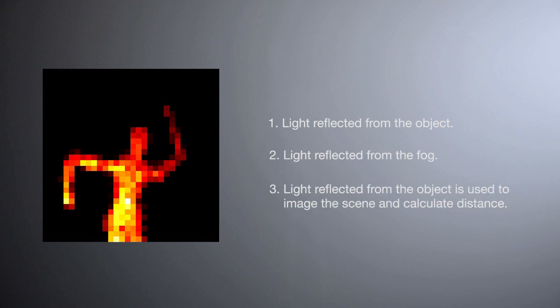The MIT researchers developed an algorithm that uses statistics about the way fog typically scatters light to separate the raw data from the camera into two parts: the light reflected from the shrouded object and the light reflected from the fog. The light reflected from the object is then used to image the scene and calculate the object's distance.